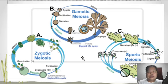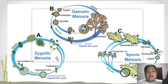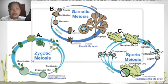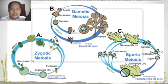Regarding zygotic meiosis, this starts from a haploid. So there are three ways gametes are formed: gametic meiosis, zygotic meiosis, and sporic meiosis.